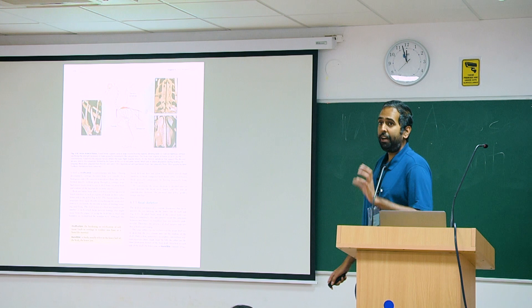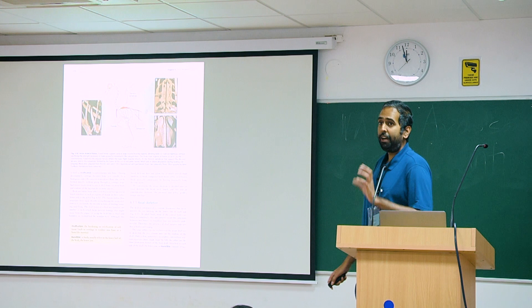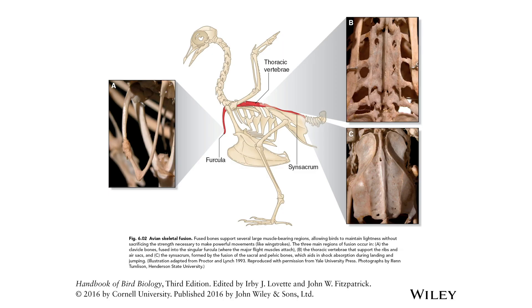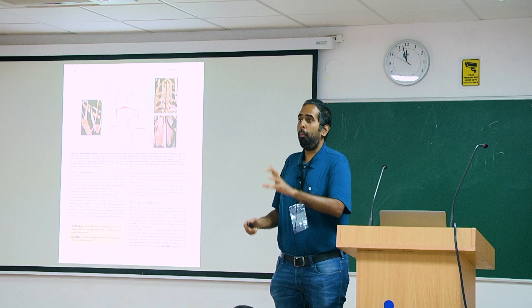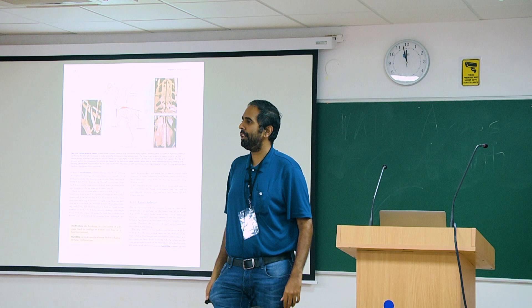If we were to say what is the adaptive value of a lot of bones fusing, the most common trend seems to be: you fuse bones in a lot of places so that they become one large bone and can hold very large muscles. Why would a bird need very large muscles? Because it's got to get off the ground.